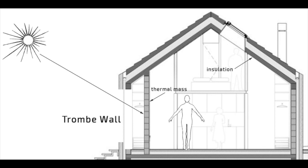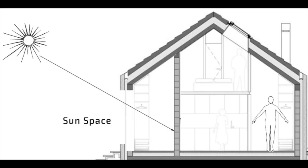Everything responds to an input of energy. This is passive. Passive solar refers to a system that collects, stores, and redistributes solar energy without the use of complex mechanical controllers.